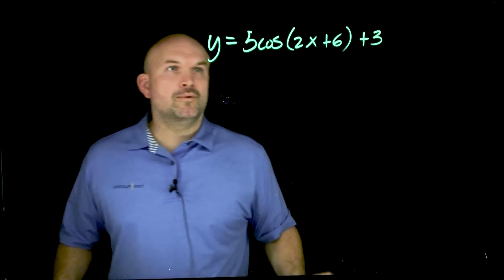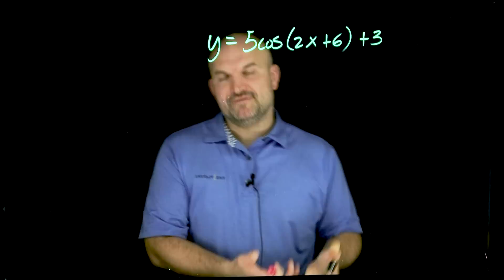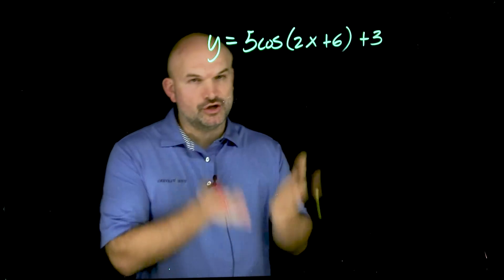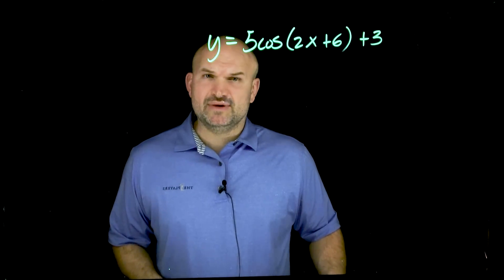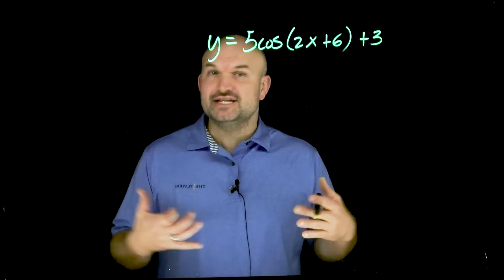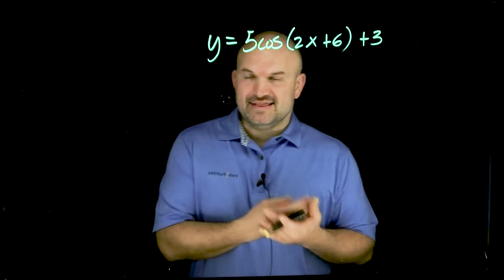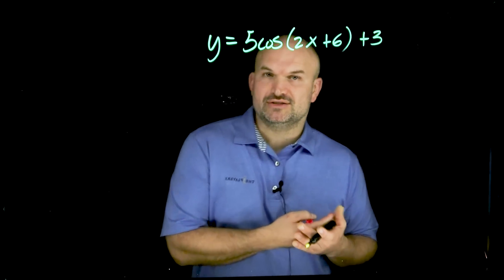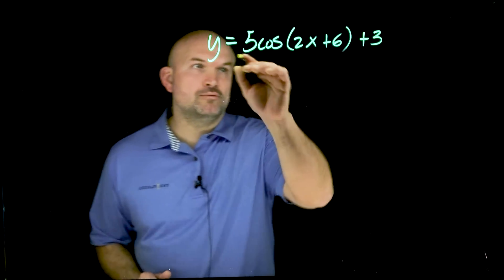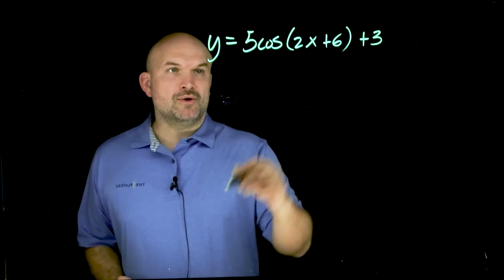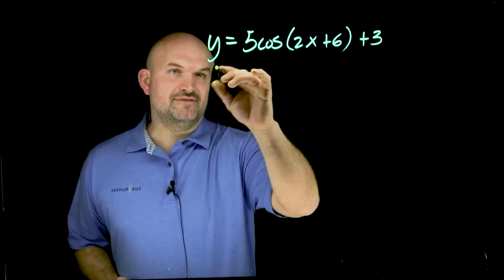I think it's very important to understand whenever we are graphing a trigonometric function like the cosine function, there are two things we need to know. One, we want to know what exactly the initial period is of the parent graph of cosine. And then we also want to be able to identify all the important parts of cosine when we have these transformations. So first, let's go through what transformations we have here.